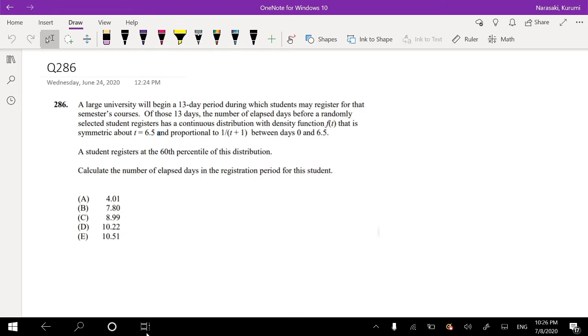A large university begins a 13-day period during which students may register for that semester's courses. Of those 13 days, the number of elapsed days before a randomly selected student registers has a continuous distribution with density f(t) that is symmetric about 6.5 and is proportional to 1 over t plus 1. So that means there must be some constant that it's multiplied by.